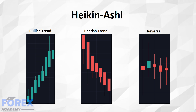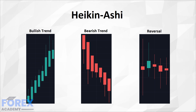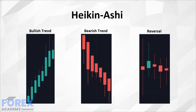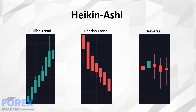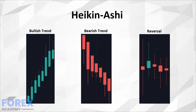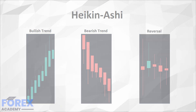The Heiken Ashi strategy revolves around the Heiken Ashi candles, which are another form of looking at the charts. They can be applied to any time frame without restrictions, so it can suit any style of trading. While they were initially designed for trading commodities and stocks, Heiken Ashi has had great success in trading cryptos as well.